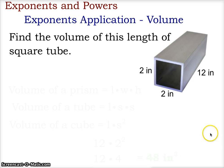Our next example is a piece of aluminum tube, and this tube happens to be a square tube. This tube has sides of 2 inches and 2 inches on the front square, and the length of the tube is 12 inches.